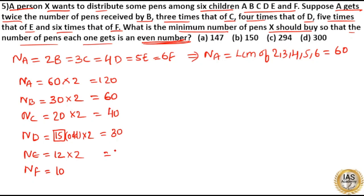12 into 2, 24. 10 into 2, 20. Now total number of pens X should buy is sum of all these numbers.